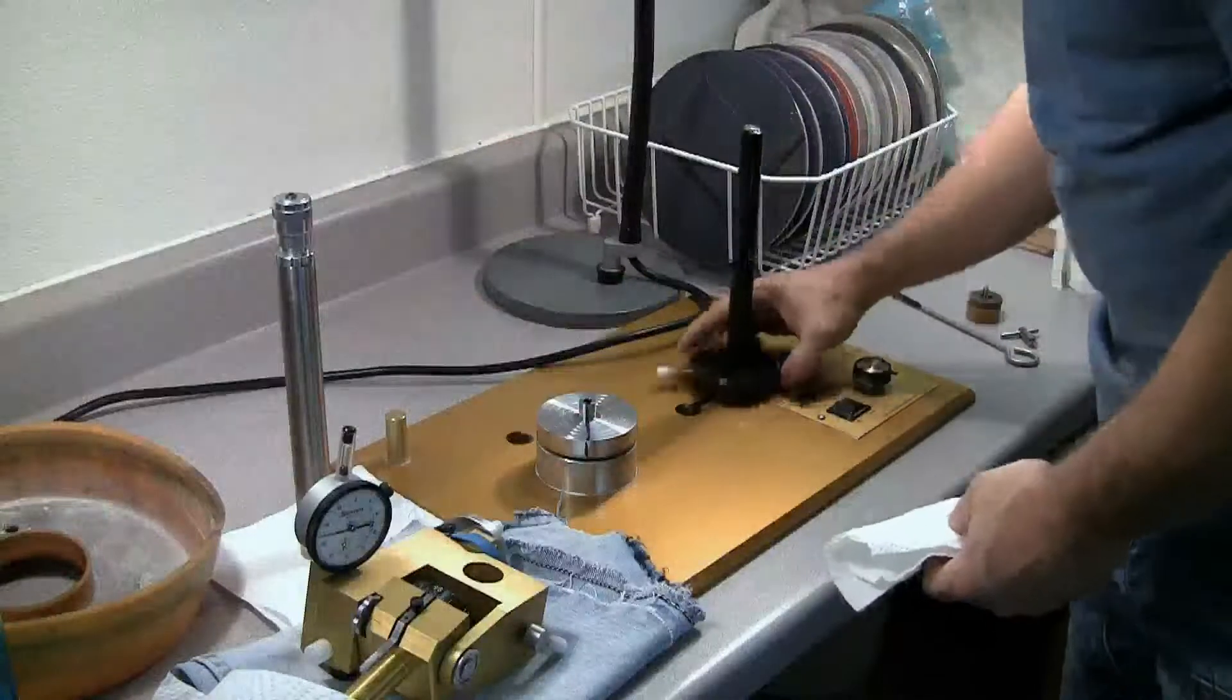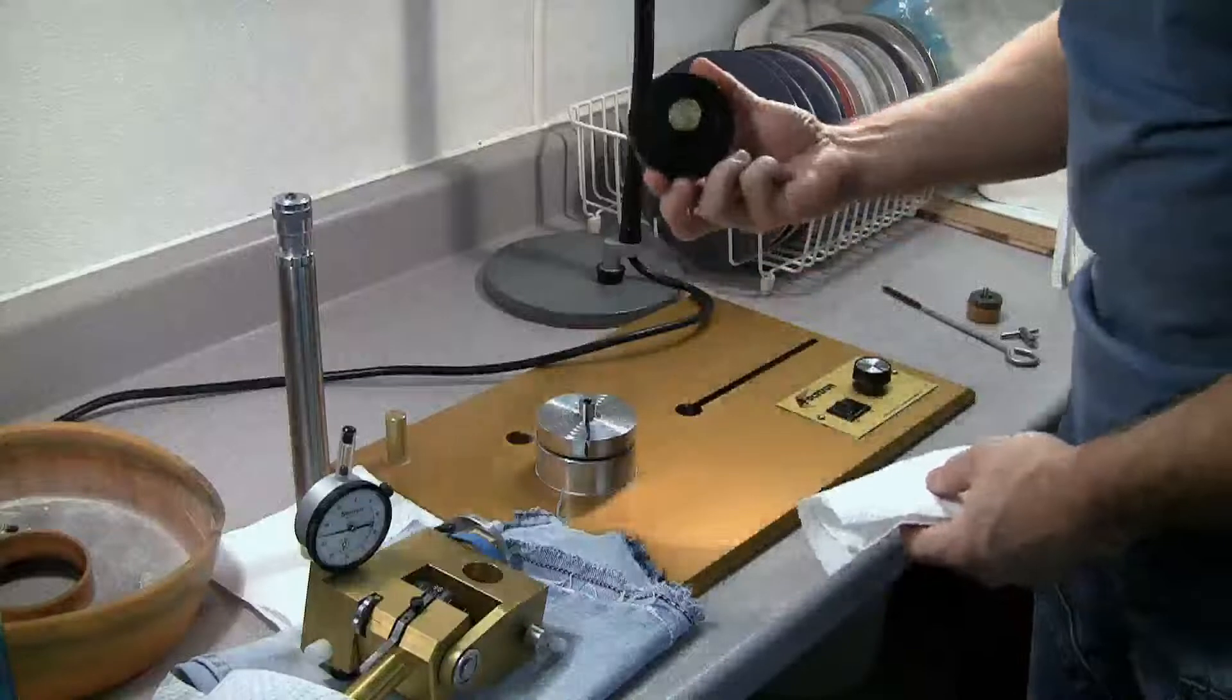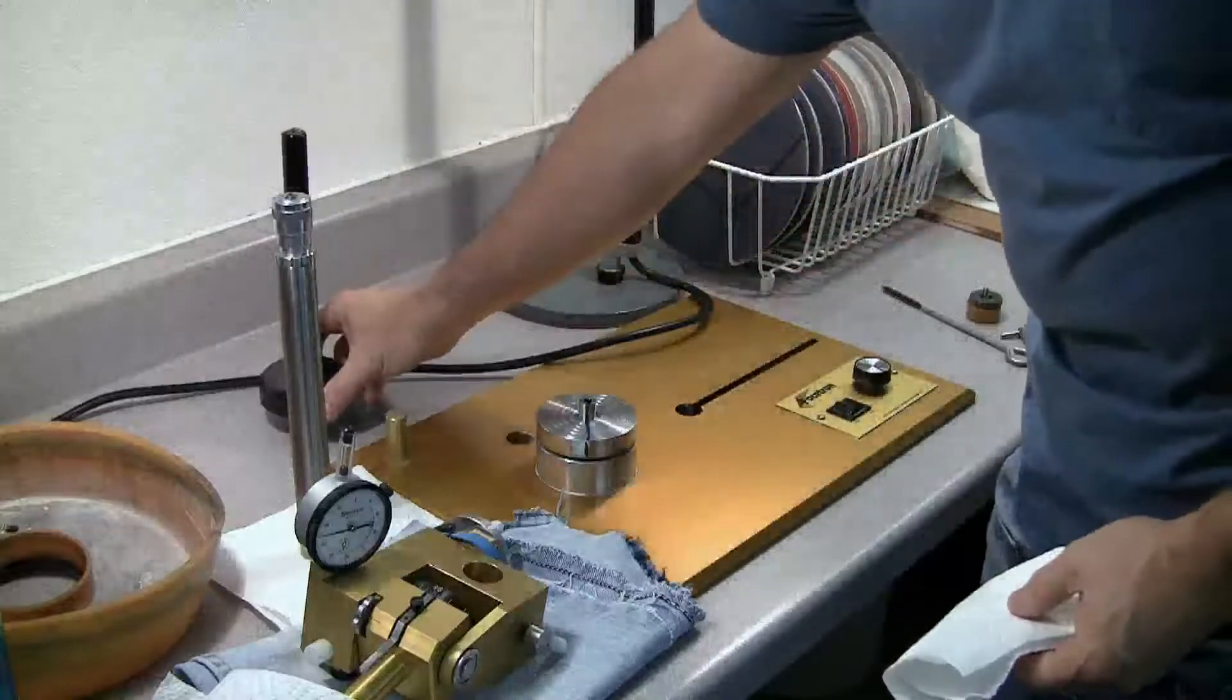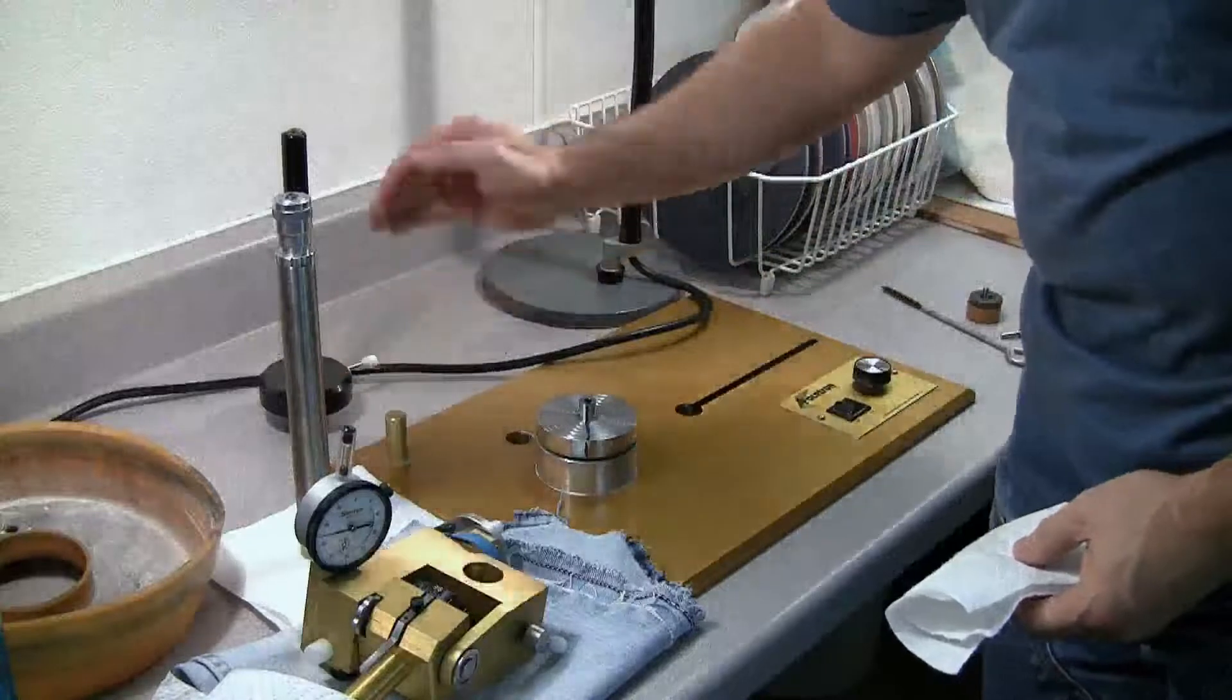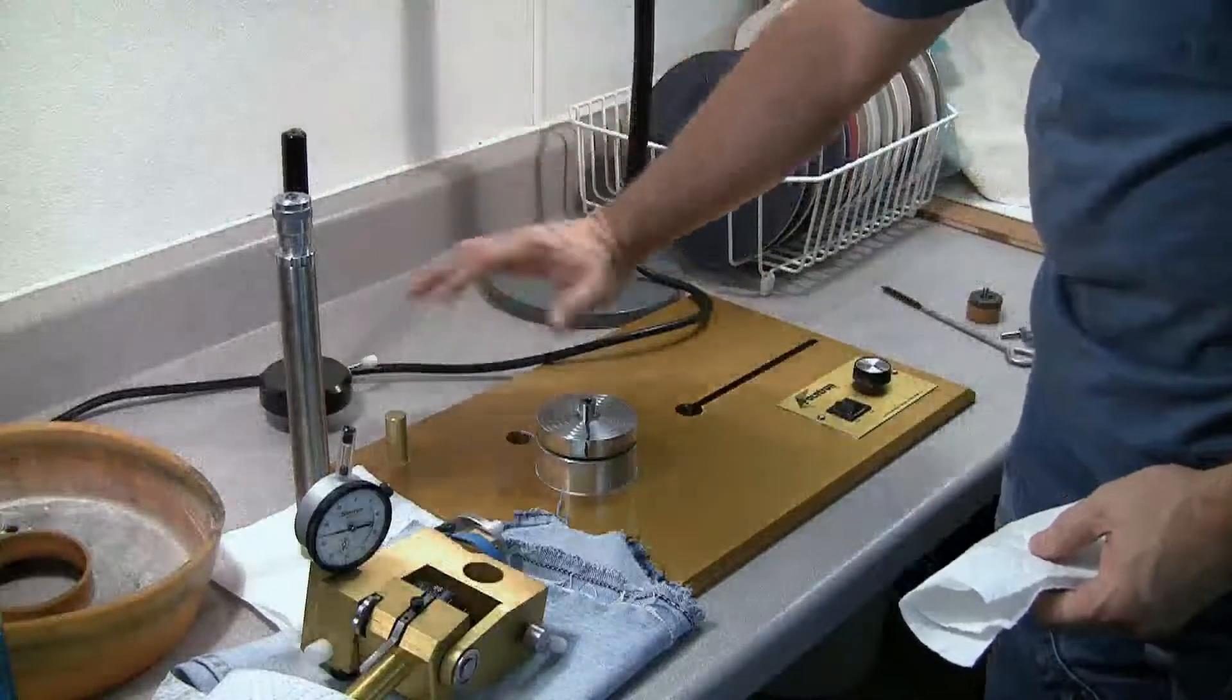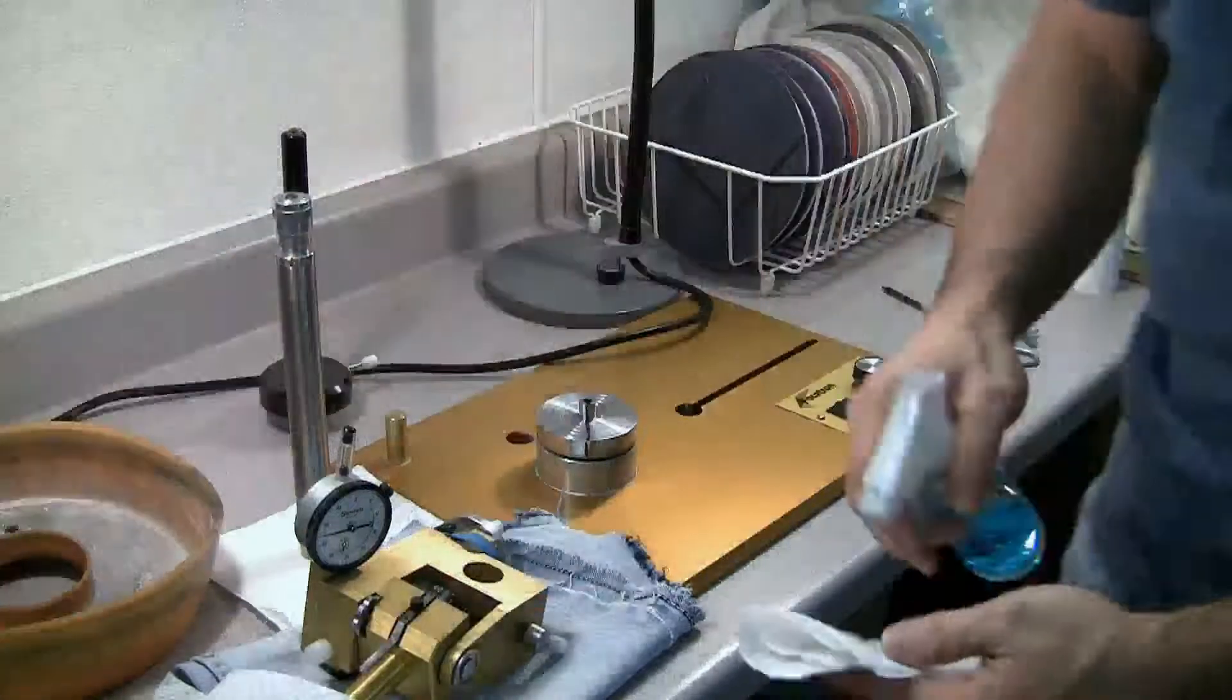For right now we're going to go ahead and remove the bottom of the mast, the foot. Remove it from the deck. Put that to the side very carefully. We're not going to bump it. We don't want to get anything on the surface of it. And we don't want to tip it over and pick up any abrasives or lint or anything on it.